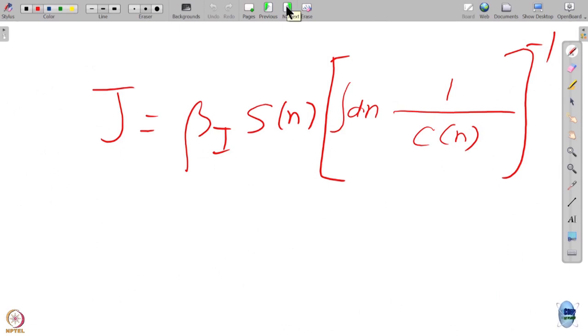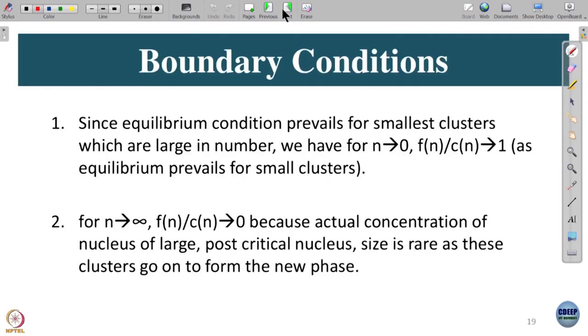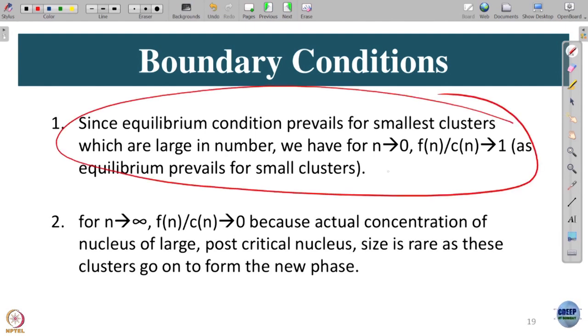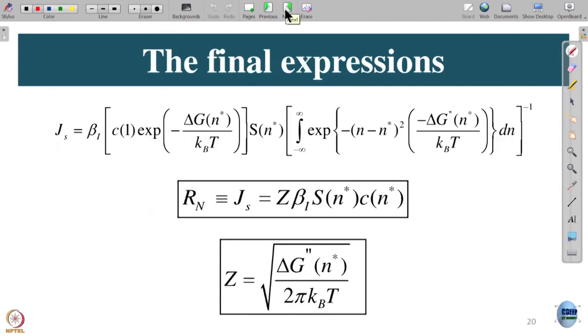I have to evaluate this thing now. We have done the main thing; I will go a little faster now. This is the thing I said. Since equilibrium prevails for smallest clusters, this F_n by C_n goes to 1. But when n goes to infinity, this goes to 0 because of actual critical size is rare—actually not rare, it is not there. So now I have to calculate the rate. This is my C_n, this is beta i S_n. Now I need, remember I need at the critical cluster.